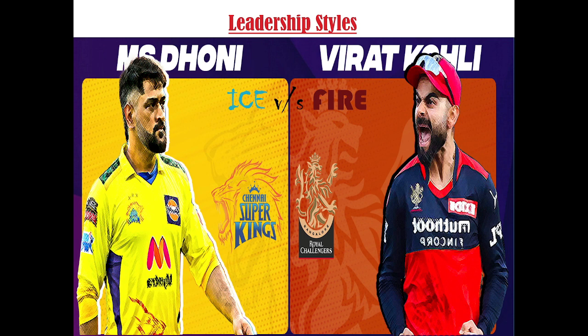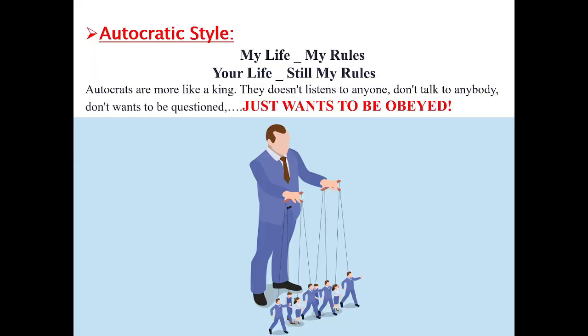Let's start with the first one — autocratic style. In this type of leadership, the leader never listens to anybody, doesn't want to be questioned, but just wants to be obeyed. The leader is like: my life, my rules — plus your life, no matter, still my rules. This is a very strict style basically.